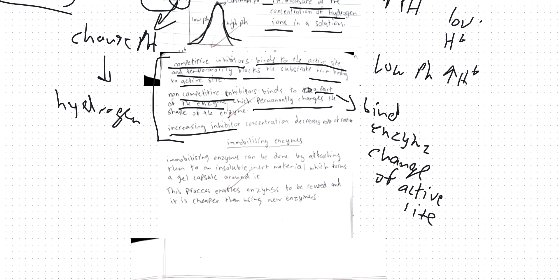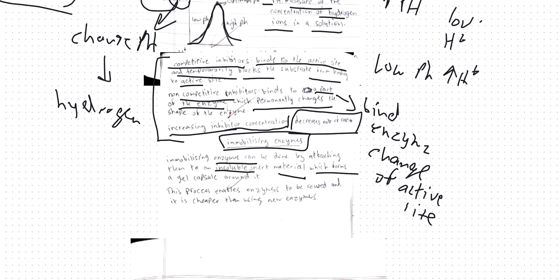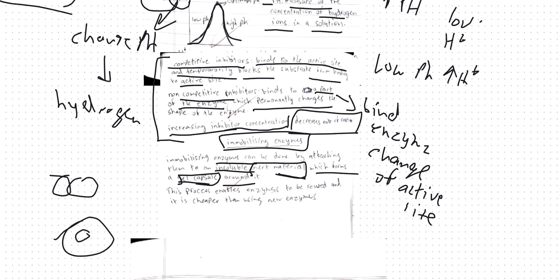Increasing inhibitor concentration decreases the rate of reaction. Immobilizing enzymes can be done by attaching them to an insoluble inert material, which forms a gel capsule around it. This process enables the enzyme to be reused again and again. This is used in industrial processes because it's very cheap and you don't have to make new enzymes — it will save you a lot of money.